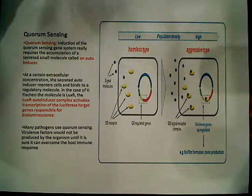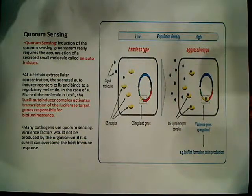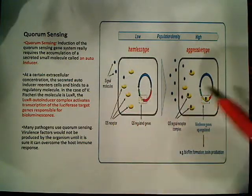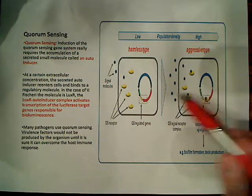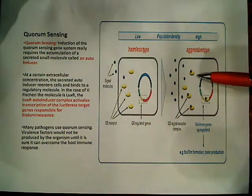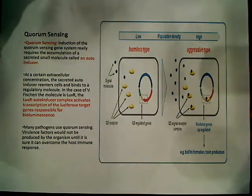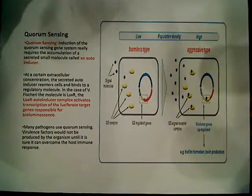At a certain extracellular concentration, the secreted autoinducer reenters the cell. Once the concentration reaches a high enough level, these signal molecules are able to reenter the cell. As you can see, they bind with the quorum sensing receptors, and they begin this process.